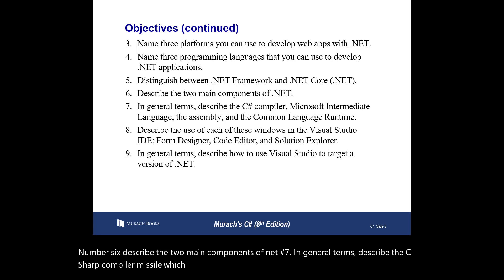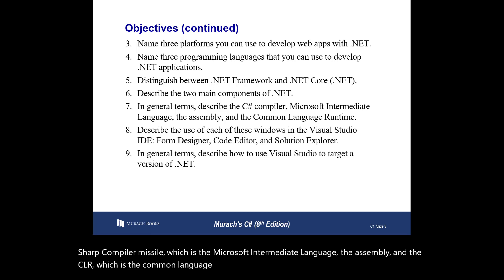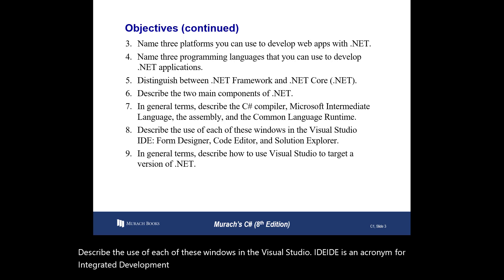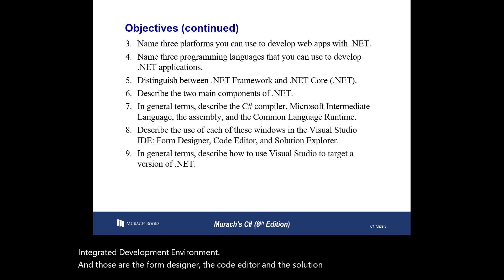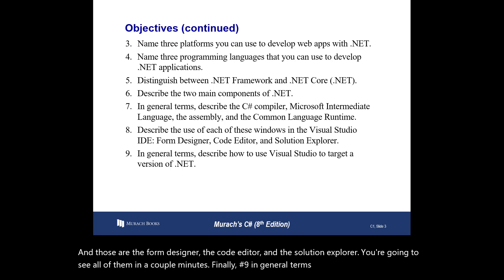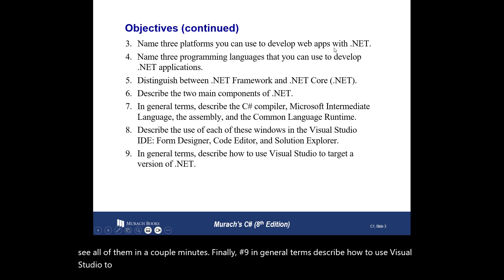Number six: describe the two main components of .NET. Number seven: describe the C# compiler, MSIL which is the Microsoft Intermediate Language, the assembly, and the CLR which is the Common Language Runtime. Number eight: describe the use of each of the windows in the Visual Studio IDE — IDE stands for Integrated Development Environment — those are the form designer, the code editor, and the solution explorer. Finally, number nine: describe how to use Visual Studio to target a version of .NET.